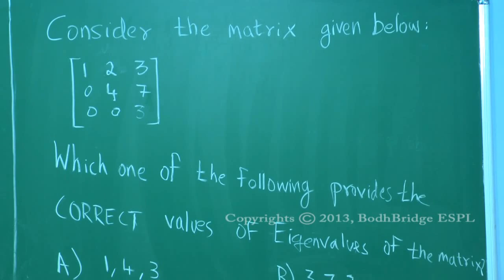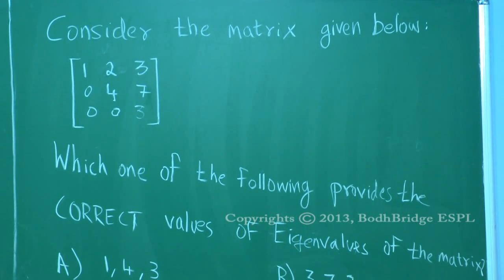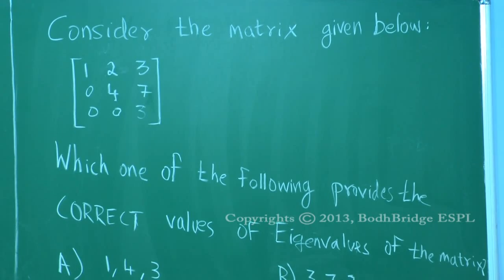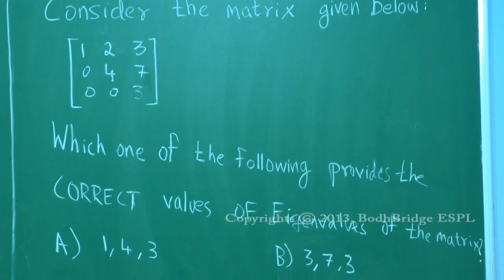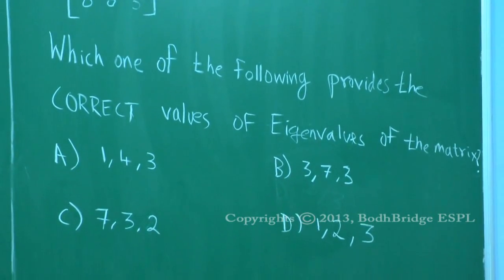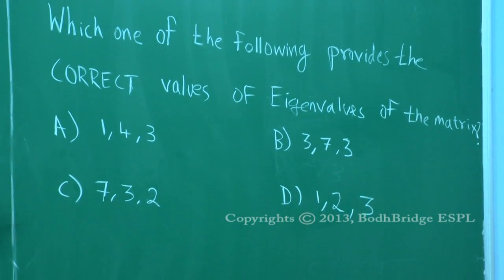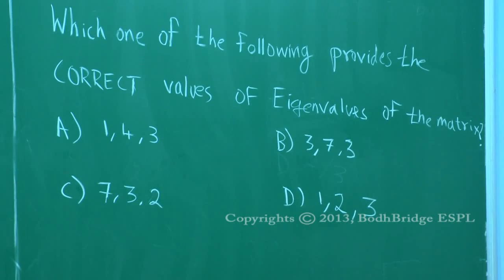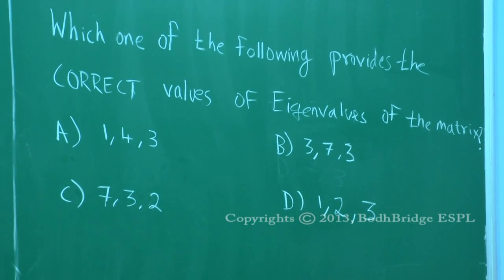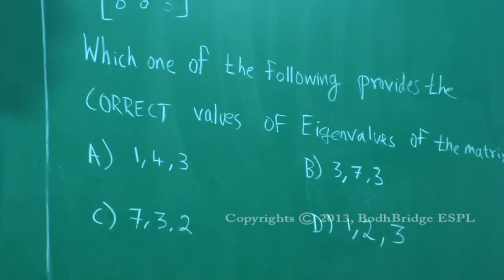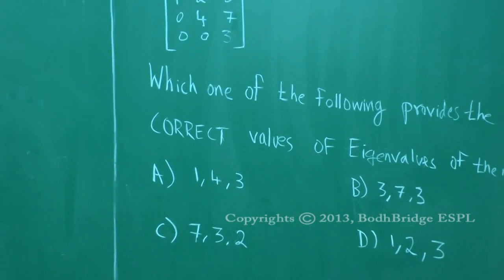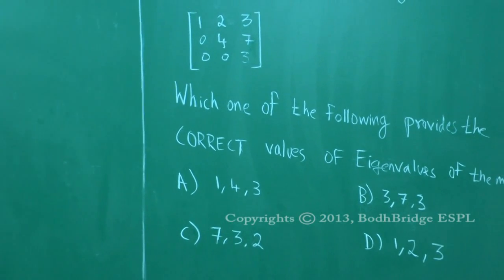Consider the matrix given below: one two three, zero four seven, zero zero three. Which one of the following provides the correct eigenvalues of matrix A? Option A: one, four, three. Option B: three, seven, three. Option C: seven, three, two. Option D: one, two, three.